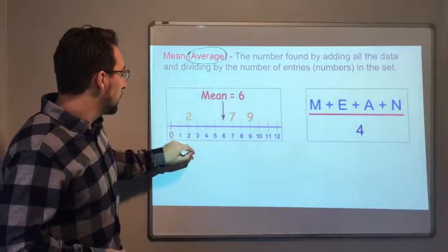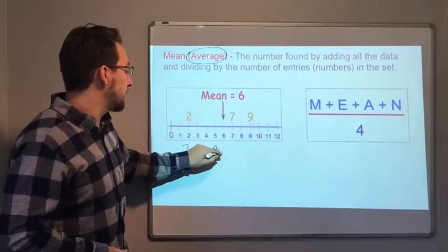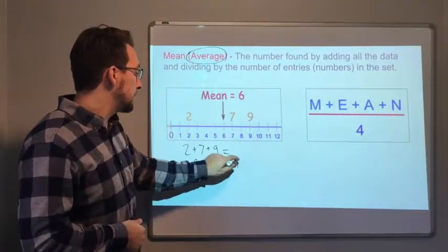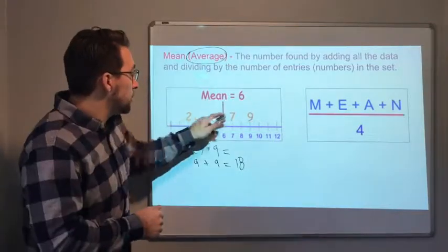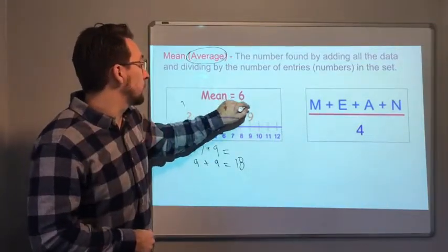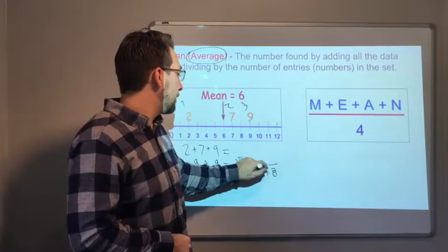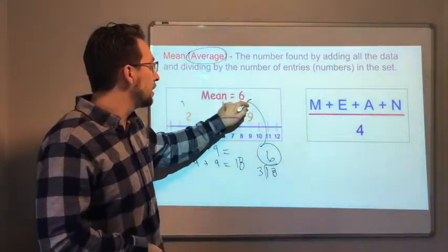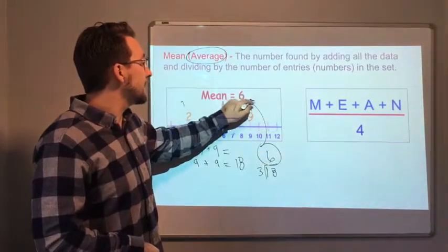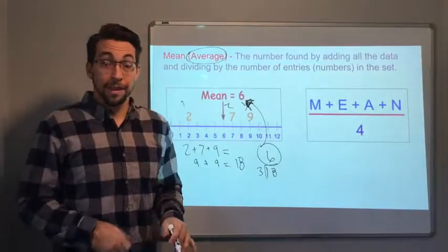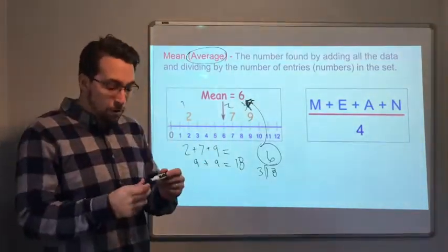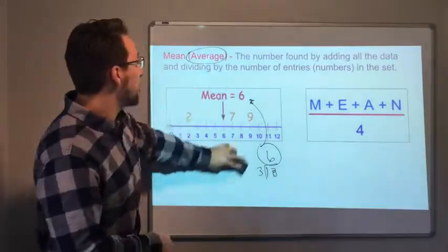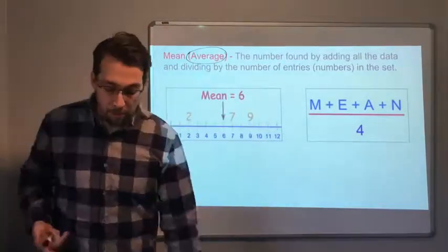So look, two plus seven plus nine equals, two plus seven is nine, so nine plus nine equals 18. How many numbers did we just add up? One, two, three. So what is 18 divided by three? Three goes into 18 six times. Our mean is six. That's the mean, the average. The average of two, seven, and nine is six. You add up all the numbers and then you divide by the number of numbers.